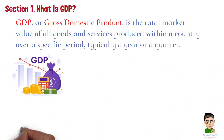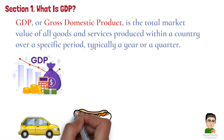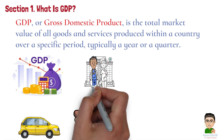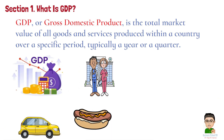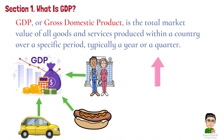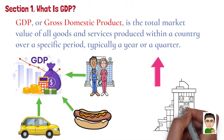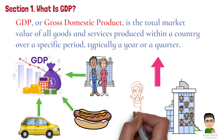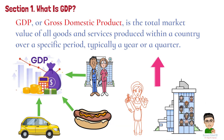For example, if you consider all the cars manufactured, food produced, and services offered by companies in the US, that's all included in the GDP. It's an indicator of economic health — when GDP is growing, it usually means businesses are thriving, jobs are being created, and consumers are spending.